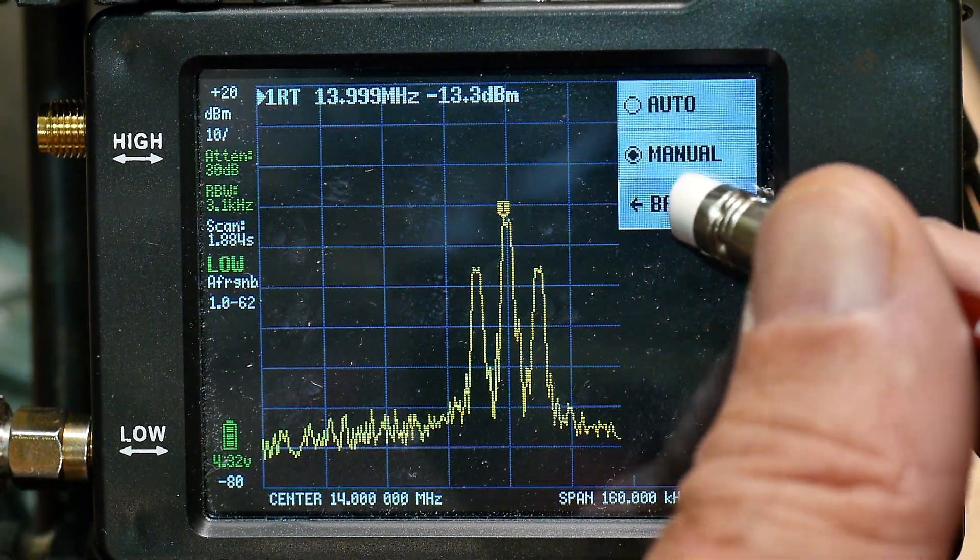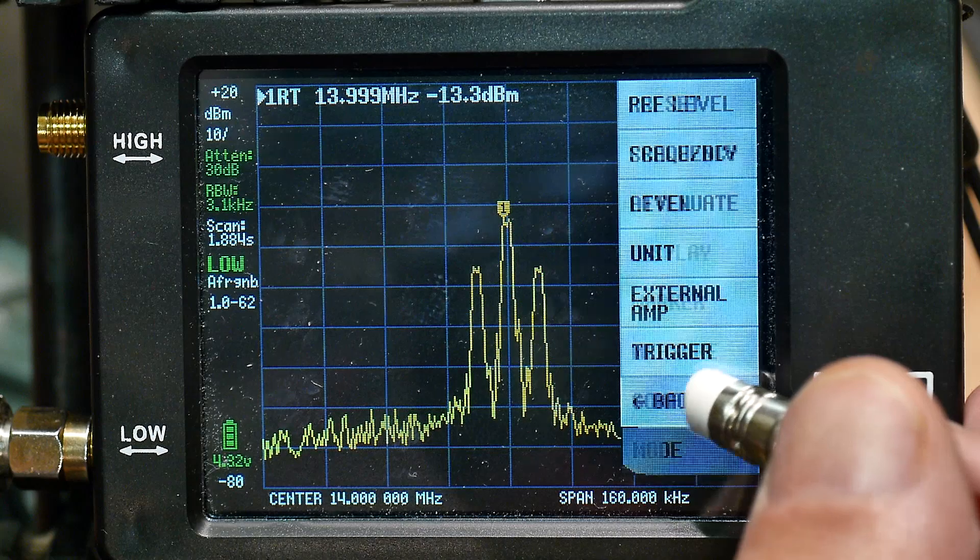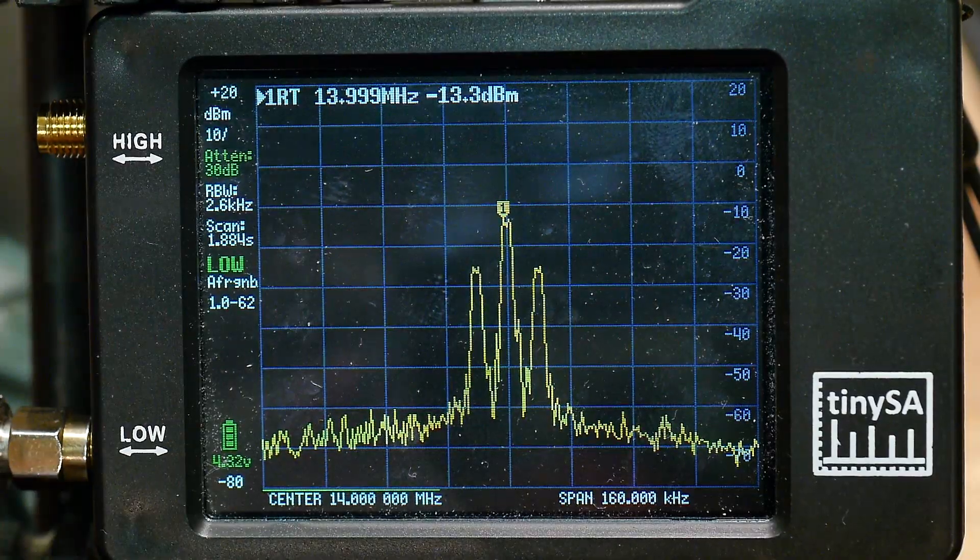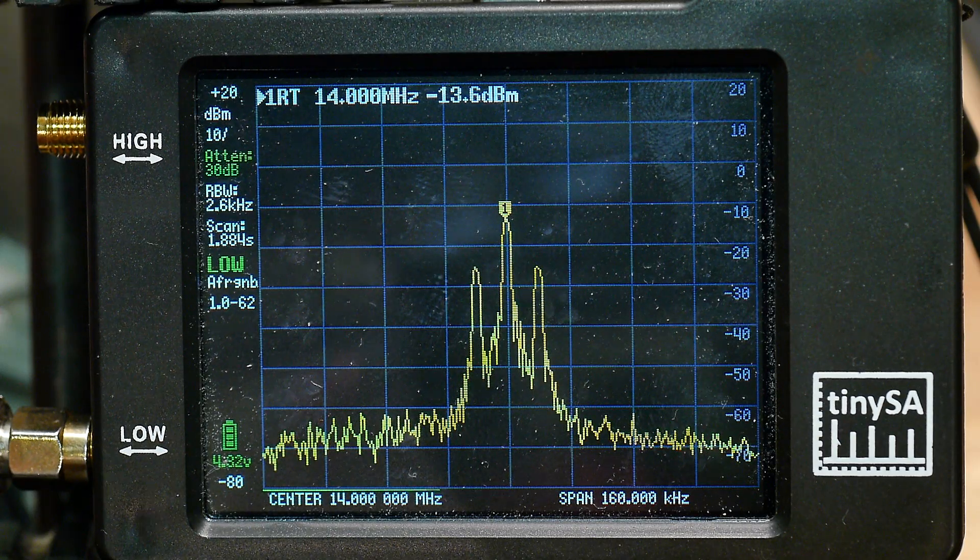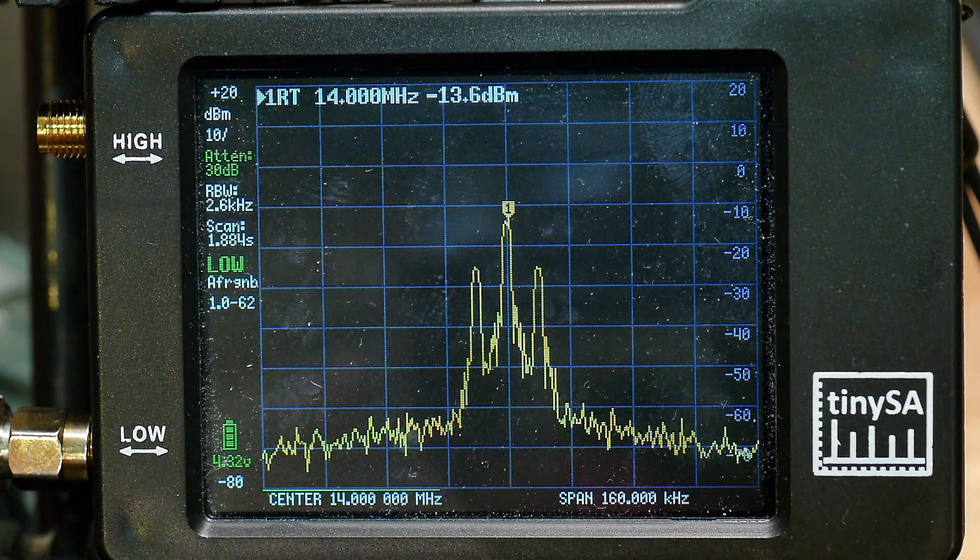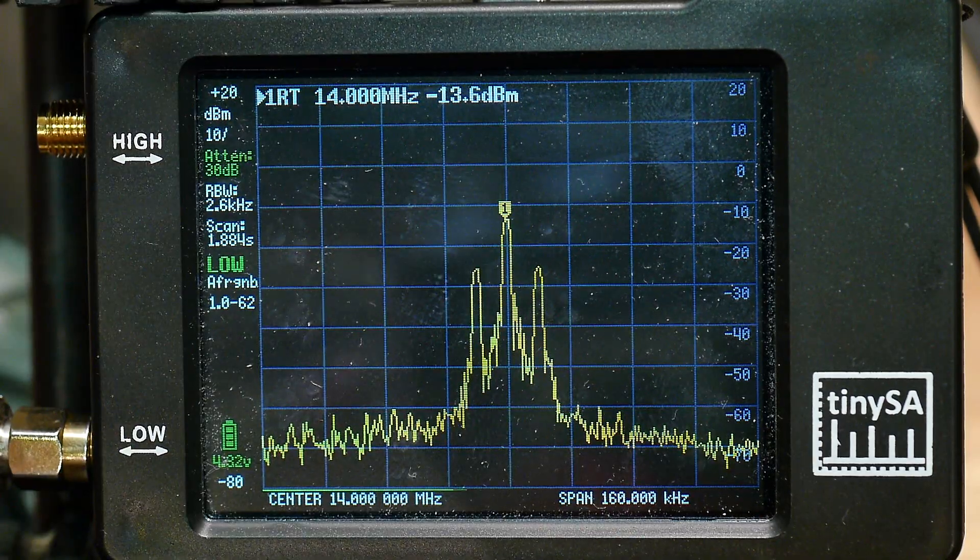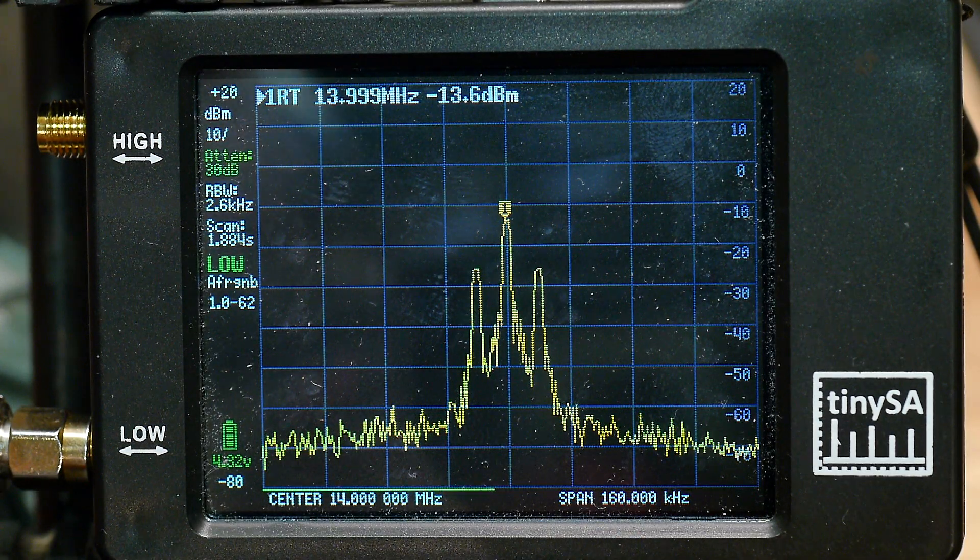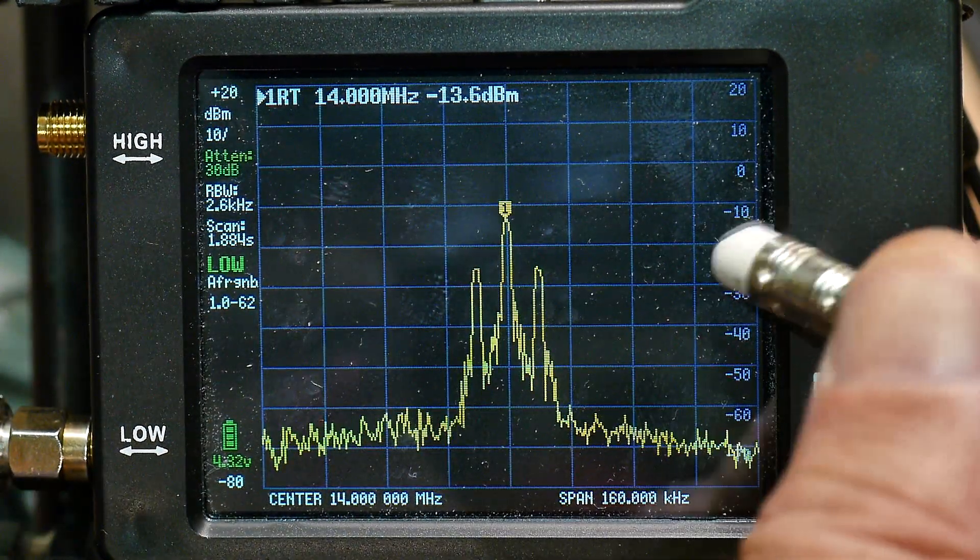If we go to resolution bandwidth and we go to auto, it gets worse again. So it puts in a whole bunch more phase noise. So it dropped from three kilohertz down to 2.6 kilohertz. You would think it would get better and it gets a whole lot worse.